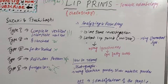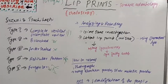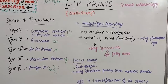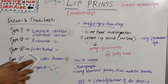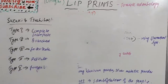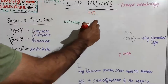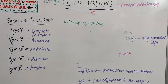There are basically three types of lip prints which can be found at a crime scene. The first is visible lip prints, the second is latent or hidden lip prints, and the third is plastic lip prints.